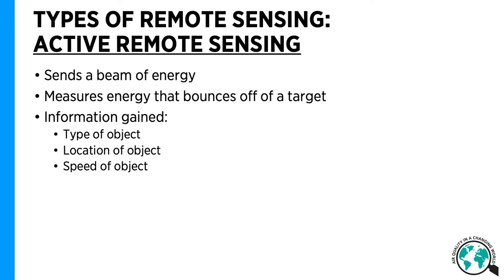There are two types of remote sensing. The first type is active remote sensing, and what that does is it sends a beam of energy. It measures the energy that bounces off of a target, and then from that you can learn the type of object, location of the object, speed of object, among other things too.